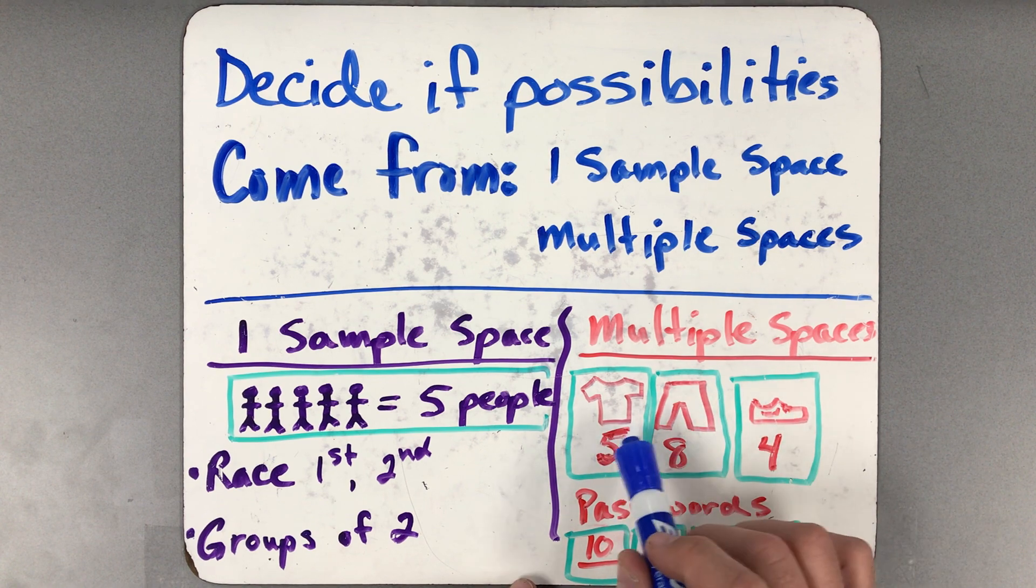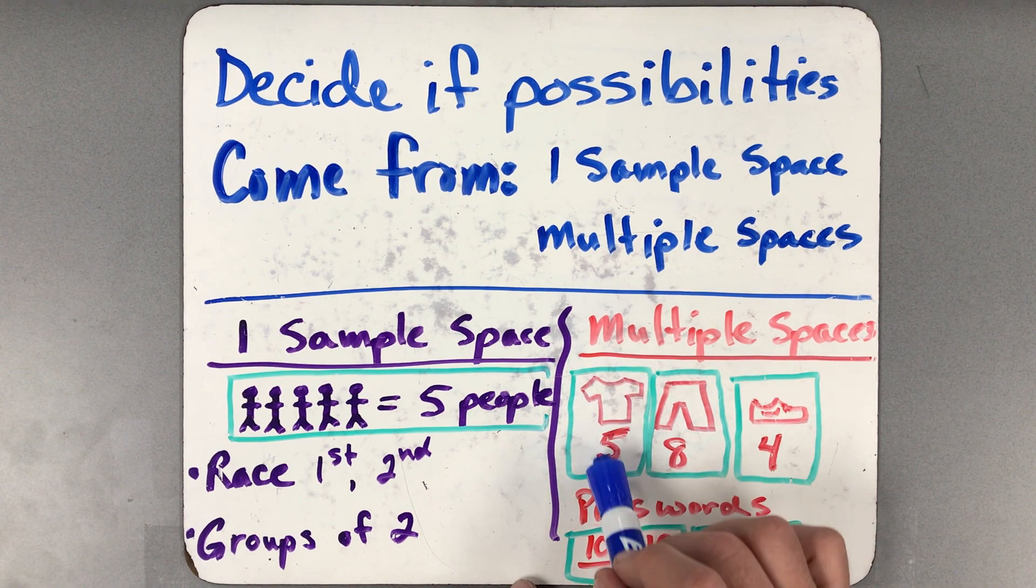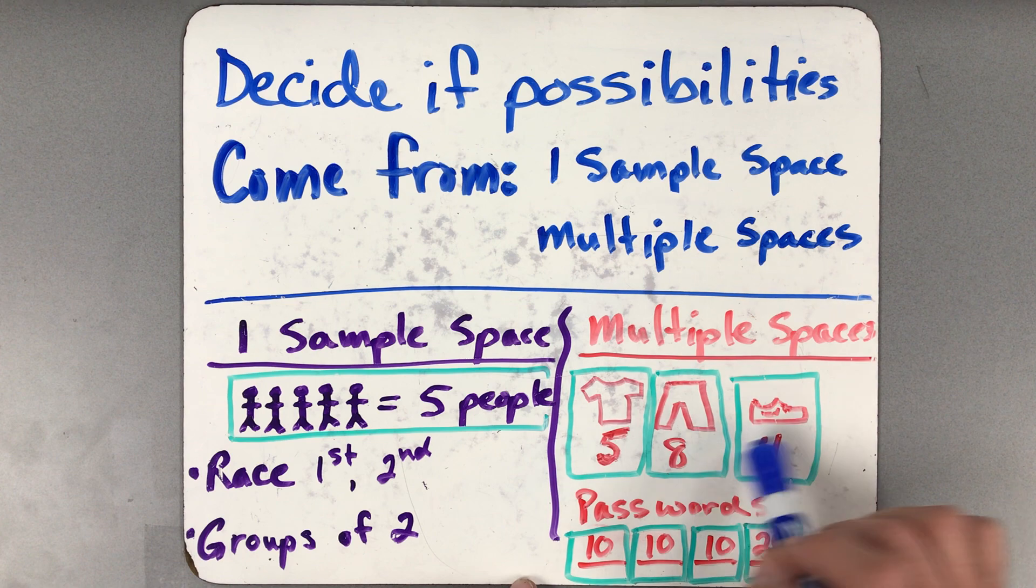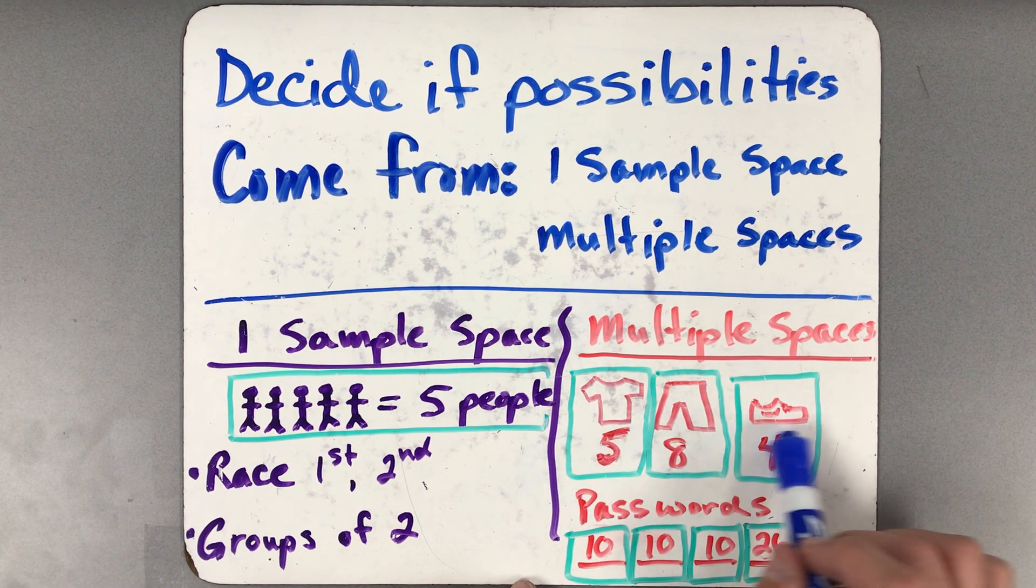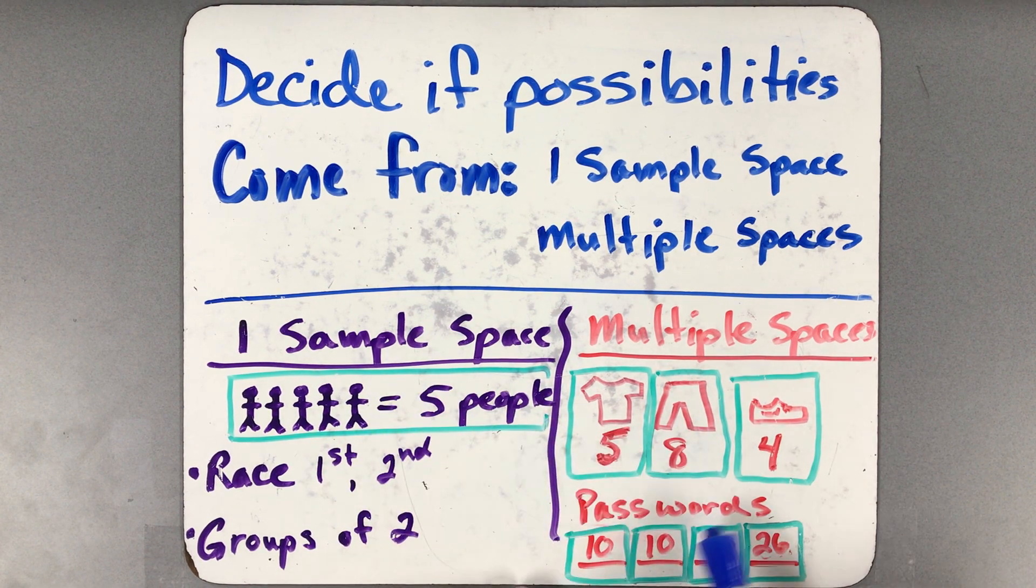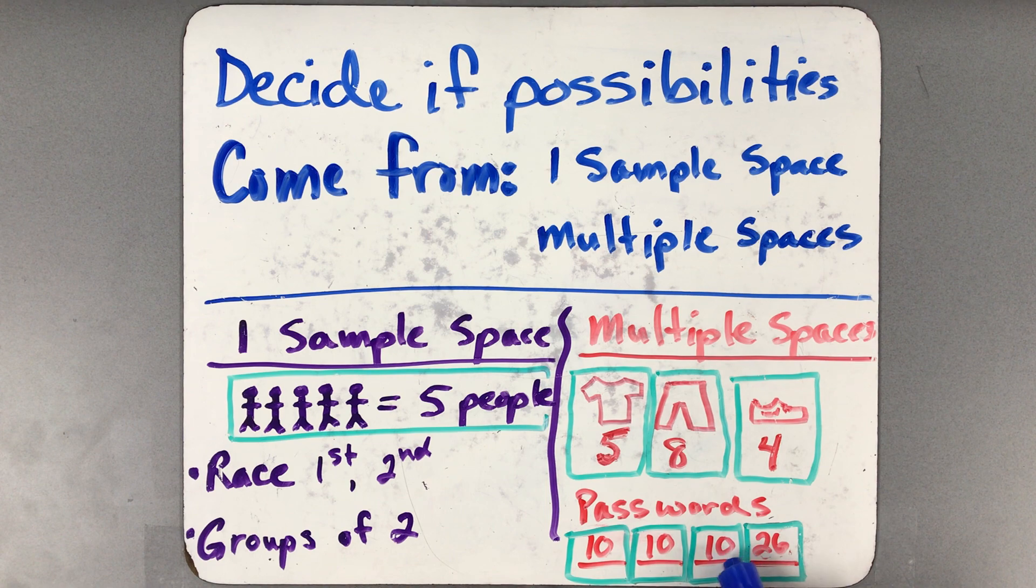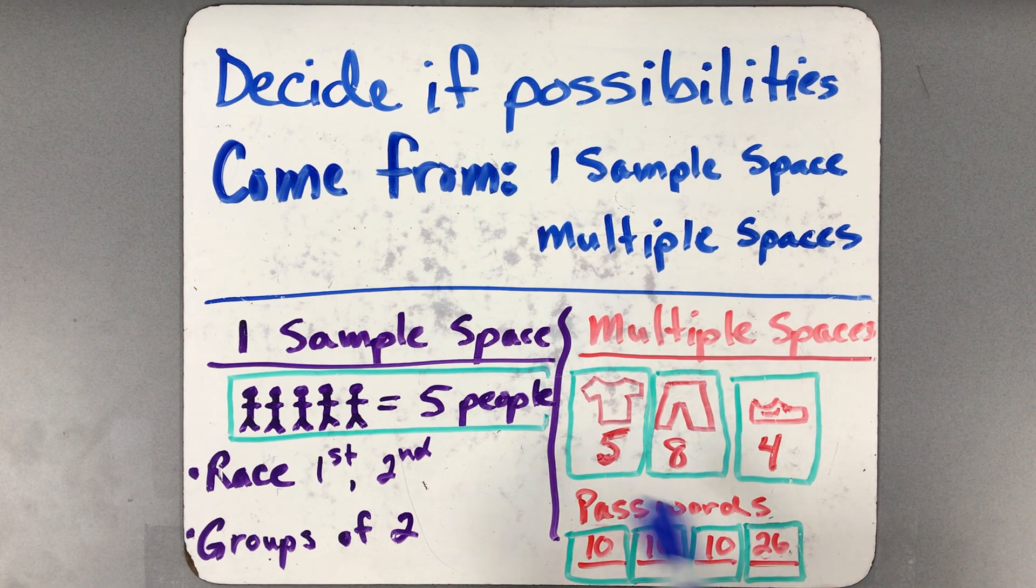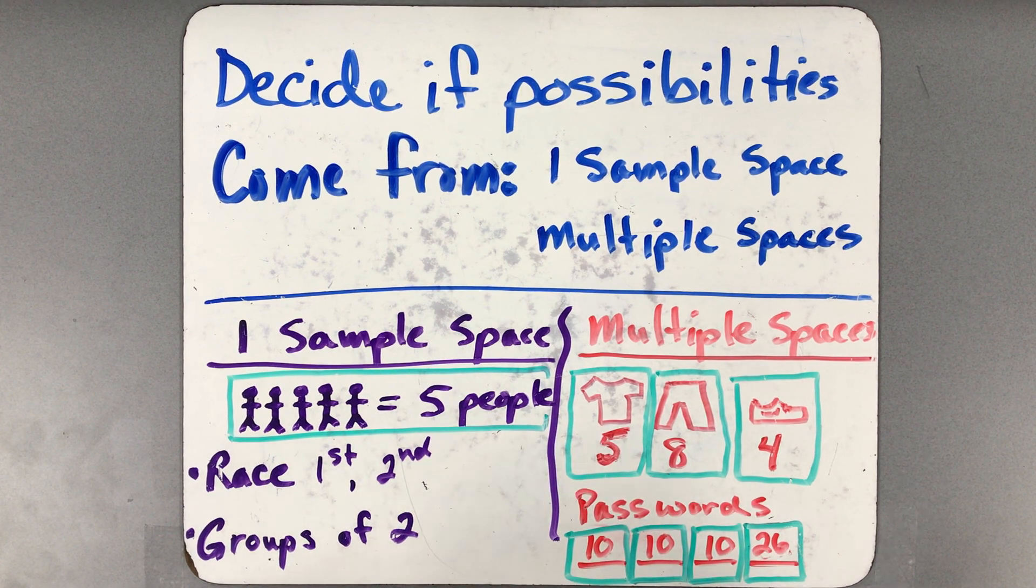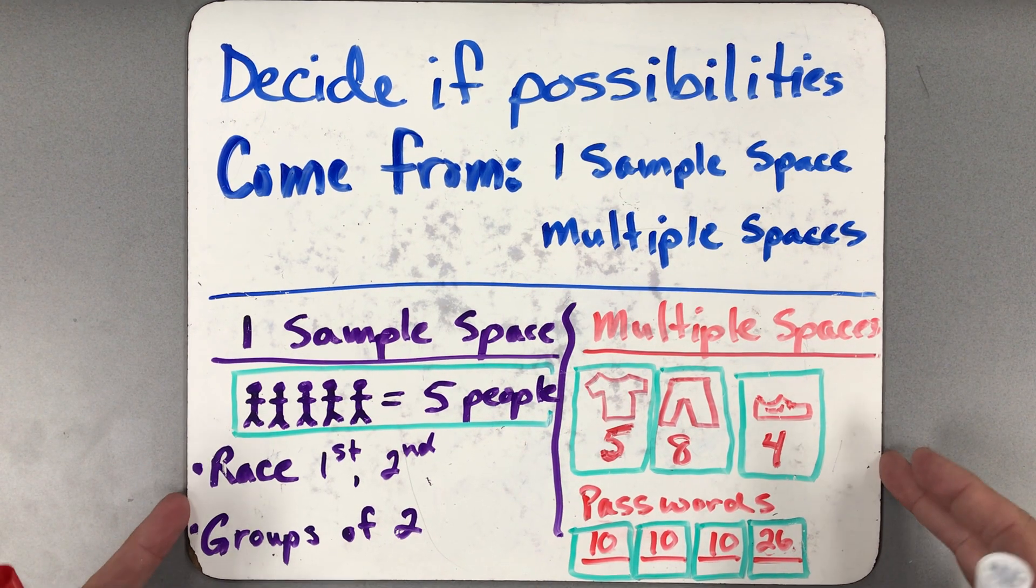So let's say for example you want to make outfits where you have to choose from a sample space of shirts, a sample space of pants, and a sample space of shoes. We're gonna pick one from each of those and make an outfit. This calculation is done differently than when you have one. Or passwords, when you have to choose a different character for each position of your password, like three numbers and then a letter. That calculation from four different sample spaces is different than how you do one sample space.